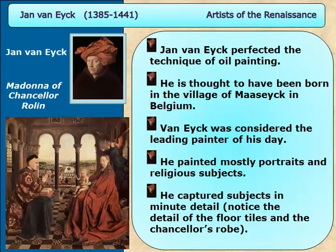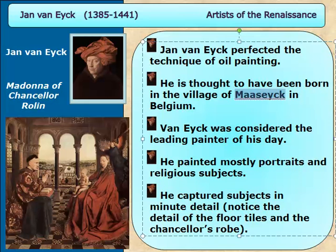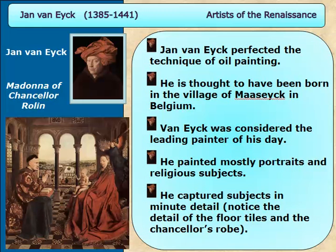First we have Jan van Eyck. He's one that got really well known for perfecting the technique of oil painting. He is thought to have been born in the village of Maaseik in Belgium. Van Eyck was considered the leading painter of his day. He painted mostly portraits and religious subjects and captured subjects in minute detail. Most artists are very much known for their attention to detail — they're usually perfectionists, and those of you who are artistic know that perfectionism can be a blessing and a curse.